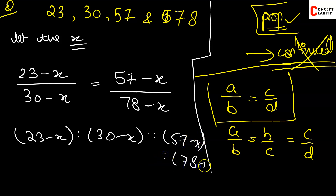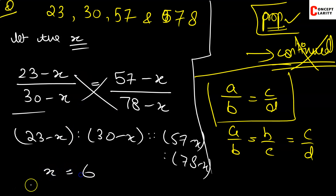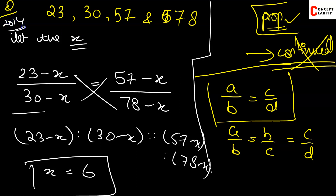We set up the proportion and cross multiply to find x. On solving, x comes out to be 6. So if we subtract 6 from each of those numbers, the resulting values will be in proportion. This question is from 2014, so I request you to have a look and practice it.